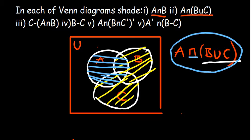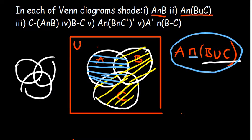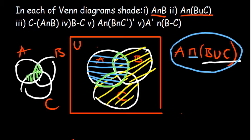So the point of intersection means where you can see both colors — that is our region that we're supposed to shade. In summary, we have our A, B, and C. What region is having both colors? If you look at the diagram, it's basically this region — the region part of A which is also part of B union C. That is the intersection region, and that is what you're supposed to shade.